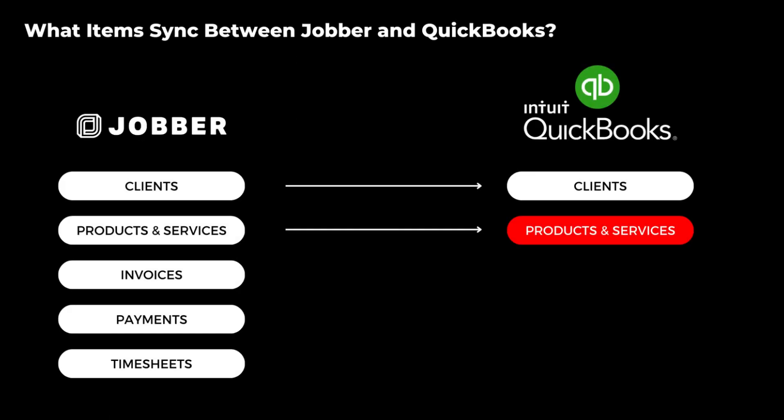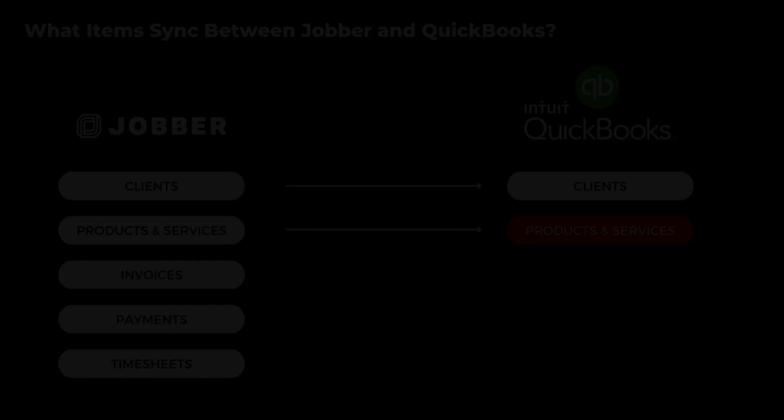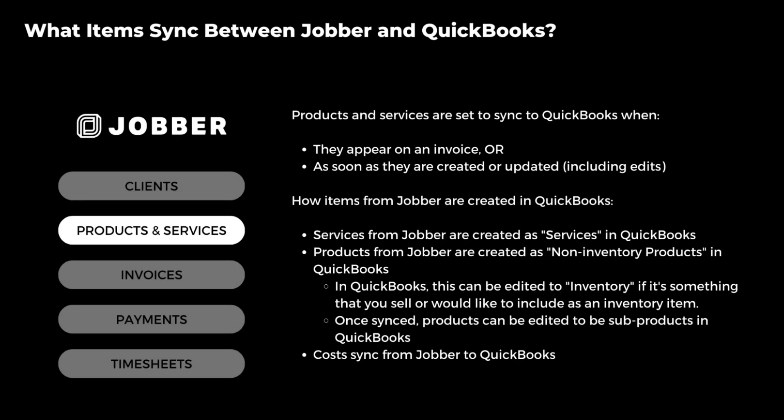Products and services in Jobber sync to QuickBooks when they appear on an invoice or when they're created or updated. In QuickBooks, services from Jobber are categorized as services, while products are labeled as non-inventory products.